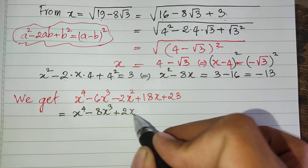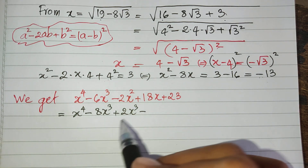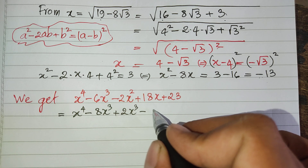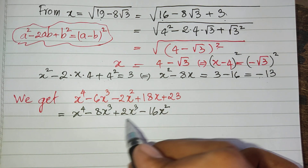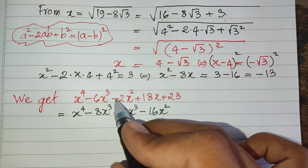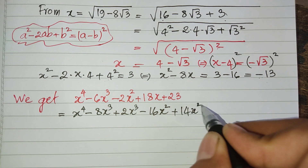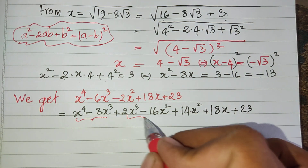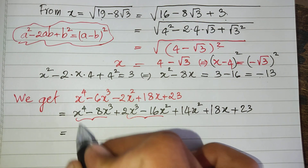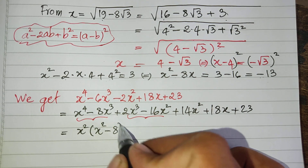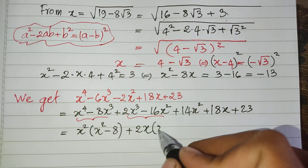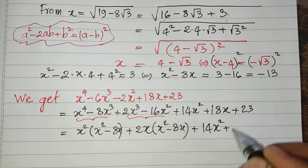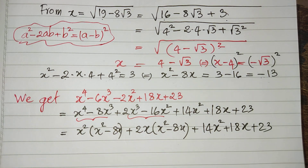Now I use this value to find the value of the expression. I can factor the numerator: I take h squared minus 8h as a group and rewrite the numerator as h squared times (h squared minus 8h) plus 2h cubed. To get the coefficient 8, I get 16h squared. Taking 2h out gives h squared minus 8h, and we have minus 2h squared plus 18h plus 23.